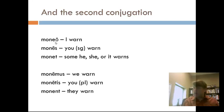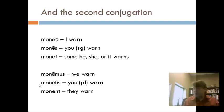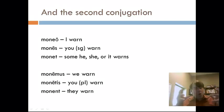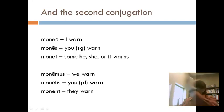Those endings — O-S-T-MUS-TIS-NT — give you the person and number of the verb. These are the first two groups: the first bag of long A's and the second bag of long E's. You're going to get a lot of mileage out of these basic endings because, even as we jump into the future and the imperfect tense, we're going to find these same endings. All of this is review.